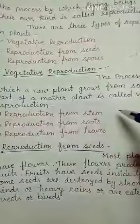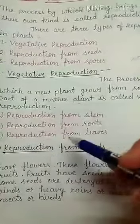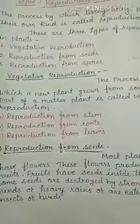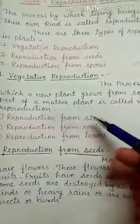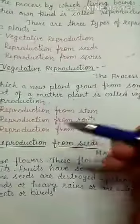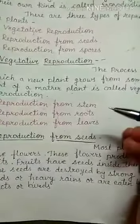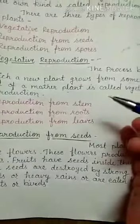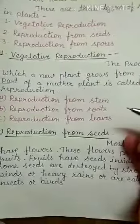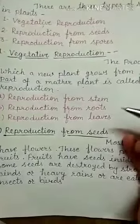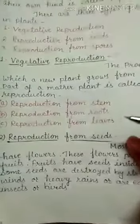Reproduction from stem: some plants reproduce from their stem. Some plants have buds on them. These cuttings are planted in the soil. After a few days, the buds grow into new plants.